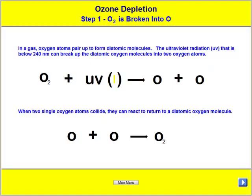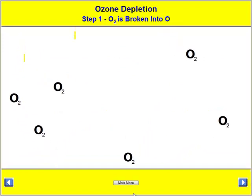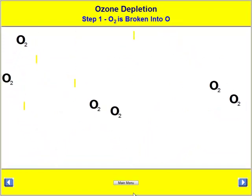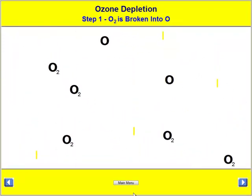Next, it goes through a detailed look at the chemistry involved — how one form of ultraviolet breaks down the oxygen into two O atoms. And when they collide, they then reform. We can see this happening in the simulation.